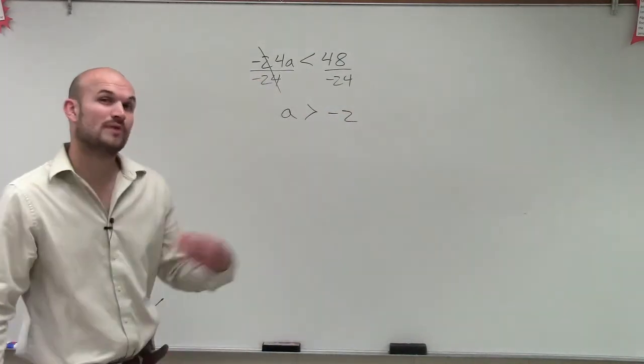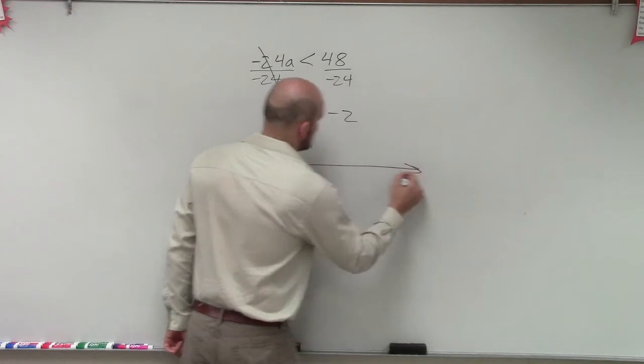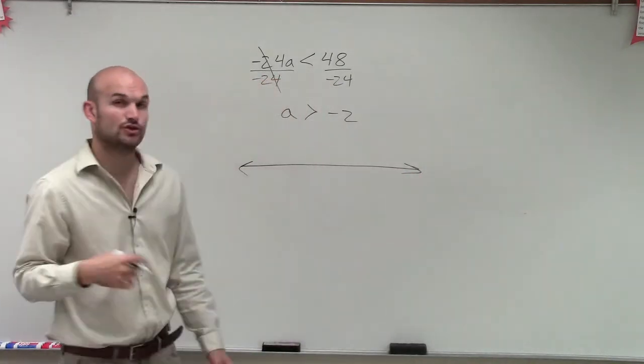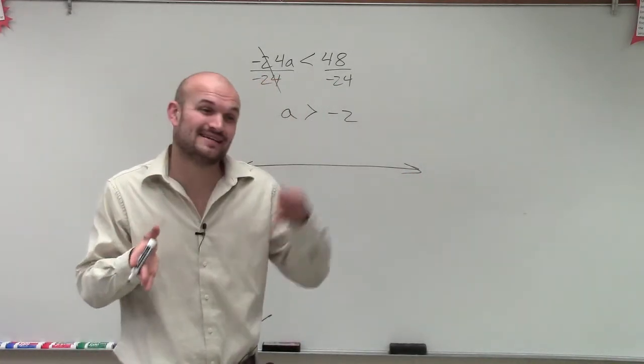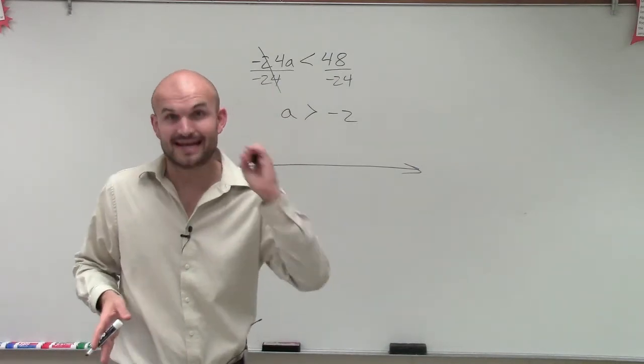Now, what we need to do is represent this solution on a line graph. So for an equation, just writing it like that was usually good enough because you had one exact. If I said a equals negative 2, that was your solution, negative 2.